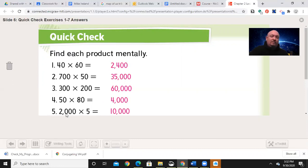The same thing is going to happen on number 5. 2,000 times 5: 2 times 5 is 10, add those three zeros, we're now in the 10,000s.